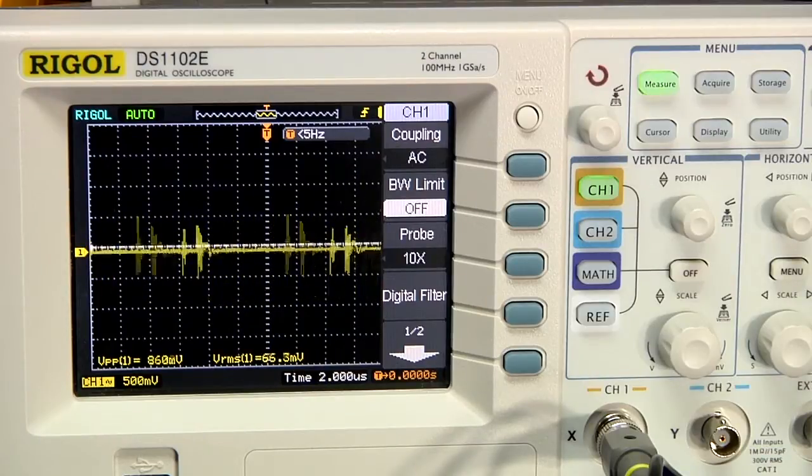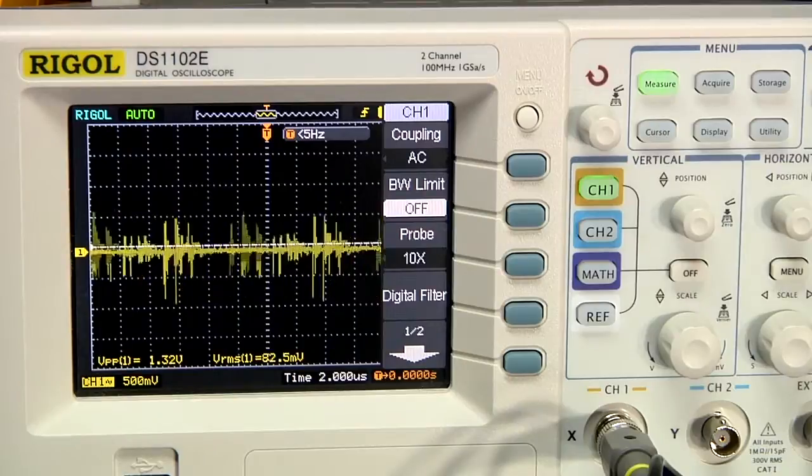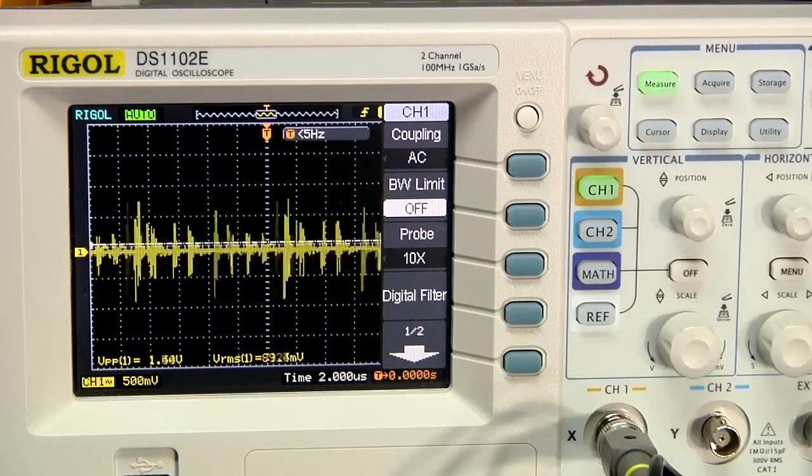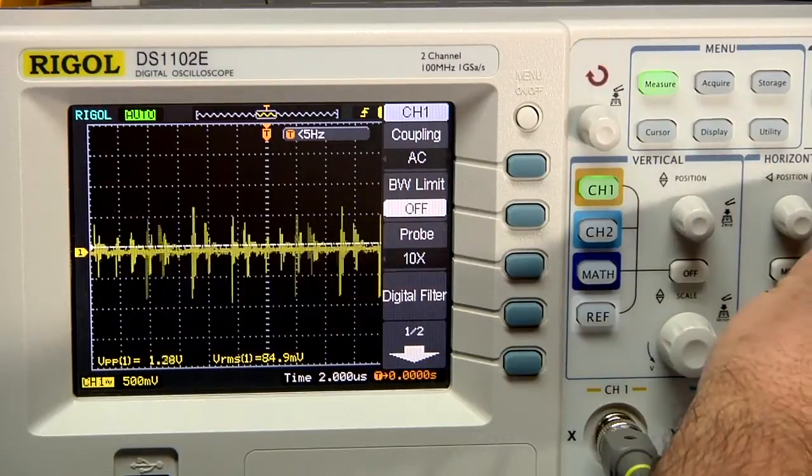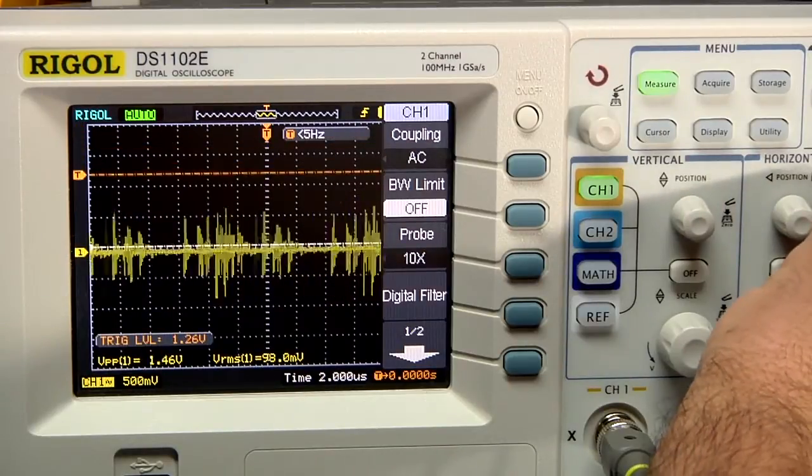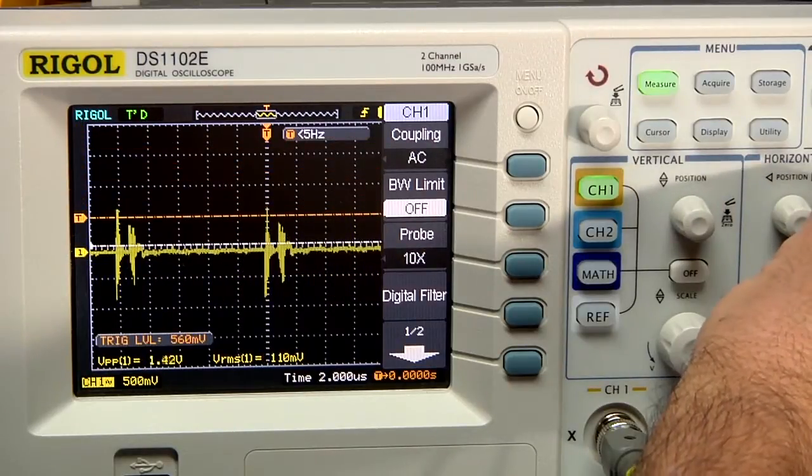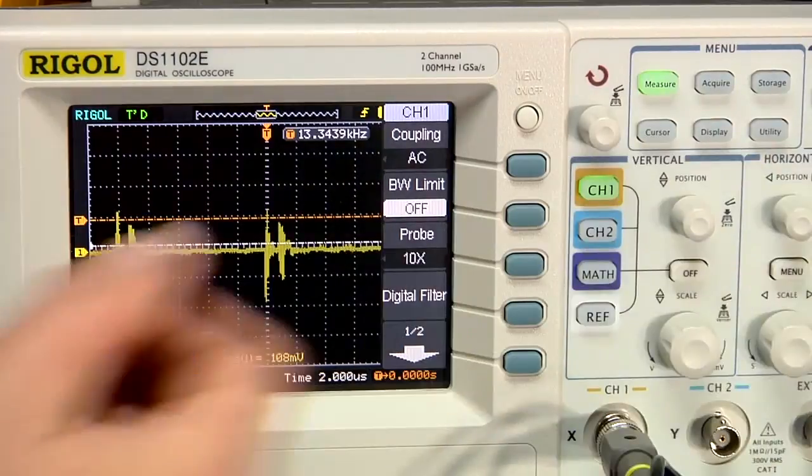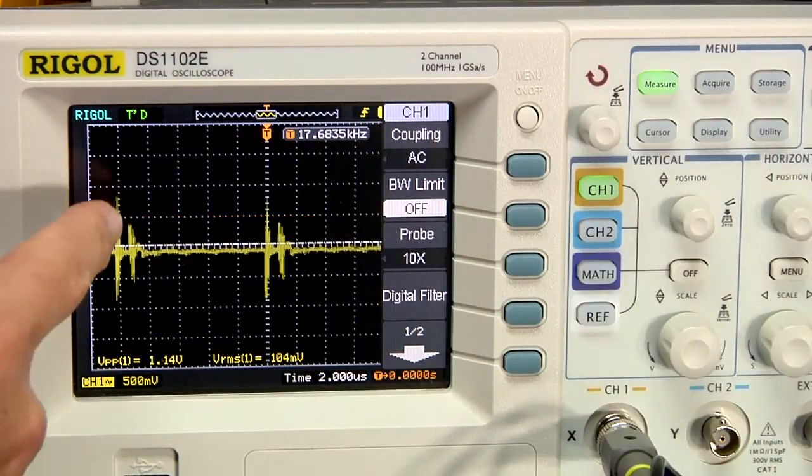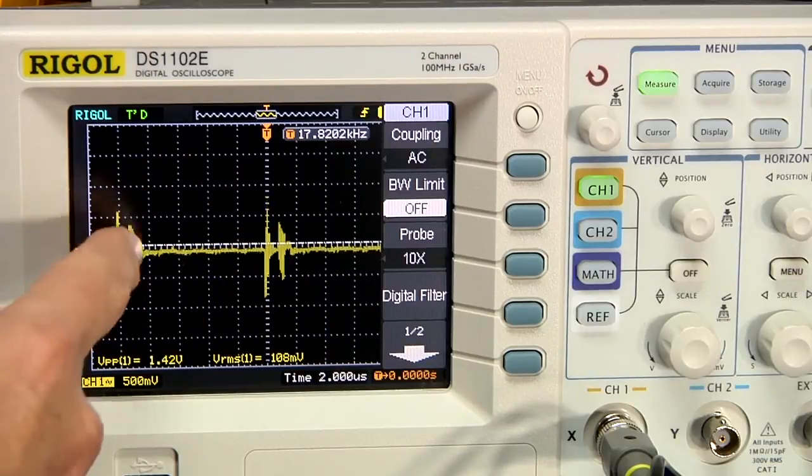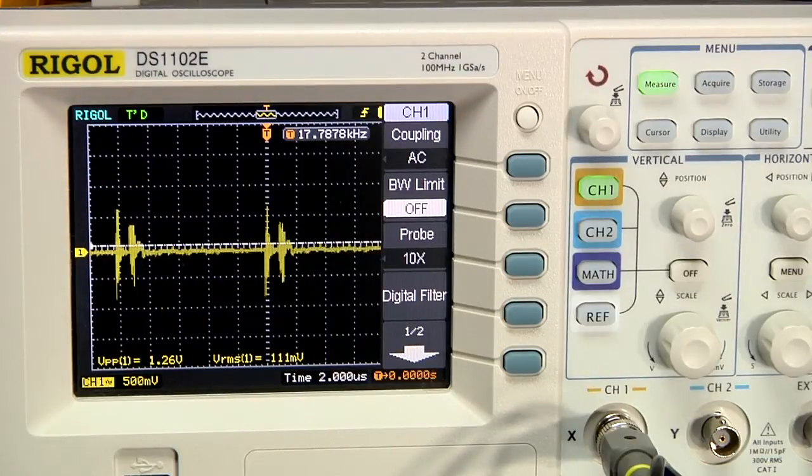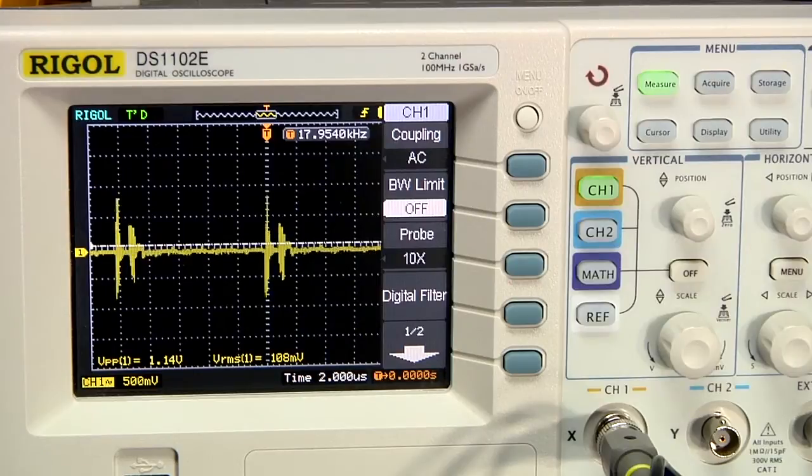Right now it's sort of free running. I'm just adjusting the trigger level, bringing it down to sync up the sweep. We can see that it definitely does that. It's pretty much periodic - we have a burst here and then another burst. We can expand it out and take a closer look, and also measure the frequencies involved.